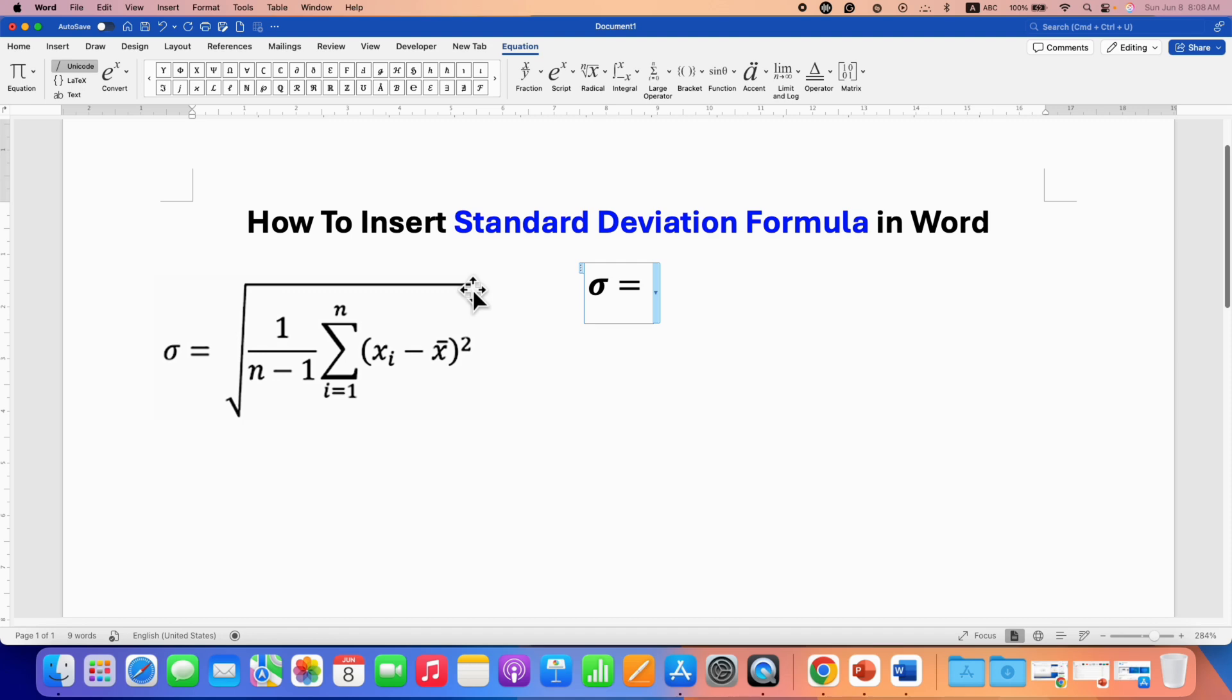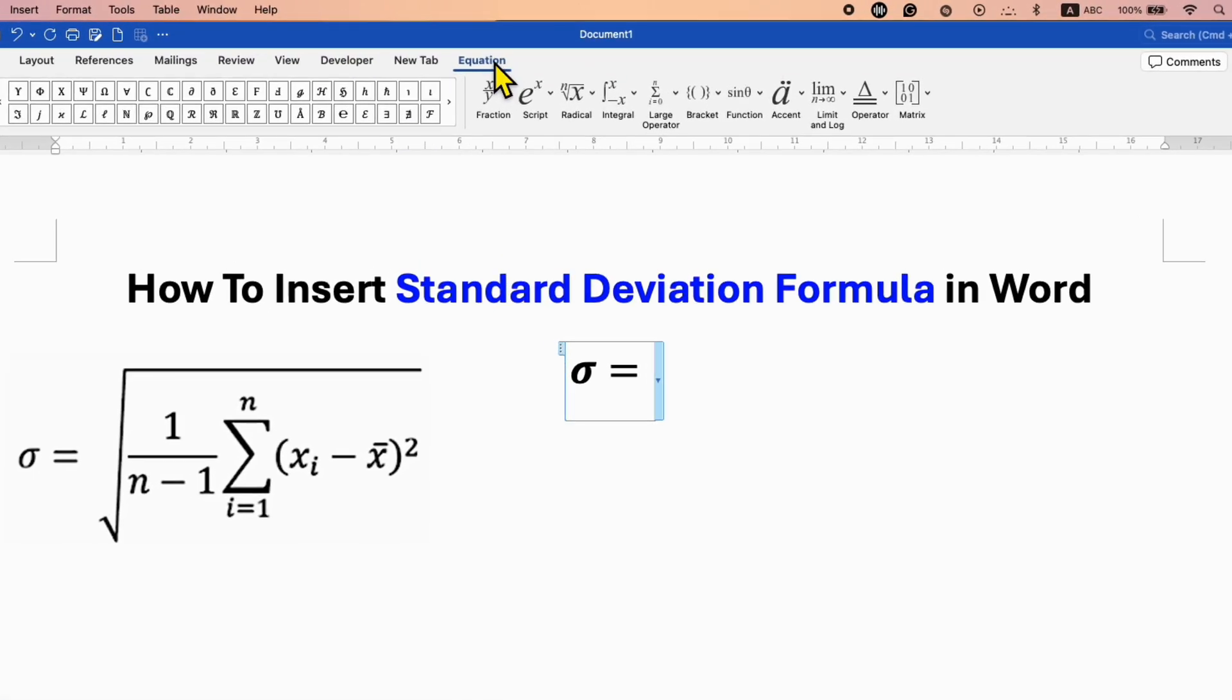Now we need this square root symbol. For the square root symbol, under the Equation tab you will see the option of Radical. Under the Radical, select the option square root.